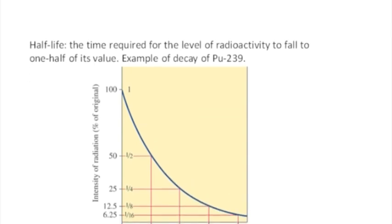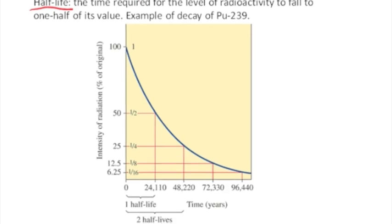So the half-life, by definition, is the time required for the level of radioactivity to fall to one-half of its value. In the examples that we just saw, we saw a half-life of 50 seconds and a half-life of 100 seconds. In both cases, the graph looked like this, which is what we call first-order rate kinetics, but the time scale was different.